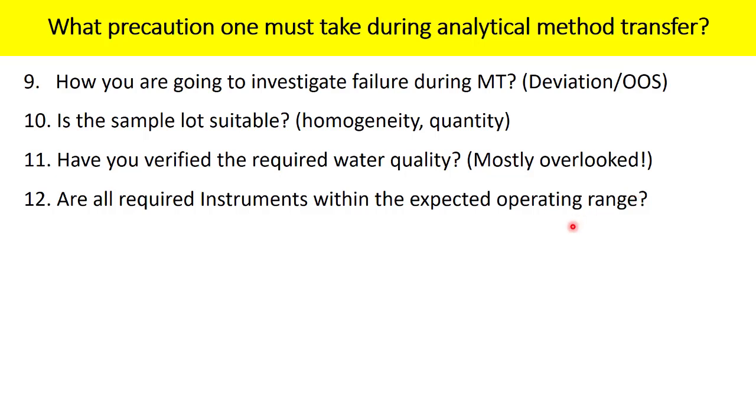Are all required instruments within the expected operating range? Now this is a very important point. Because most of the times we only think about, okay, there is a gas chromatograph required. I do have the gas chromatograph. But what specification is necessary for the gas chromatograph that is supposed to be used? Maybe in terms of your column oven temperature. Maybe in terms of the heating range of the detector. Maybe in terms of your injection volume. Those details have to be confirmed well before you start your experimentation.